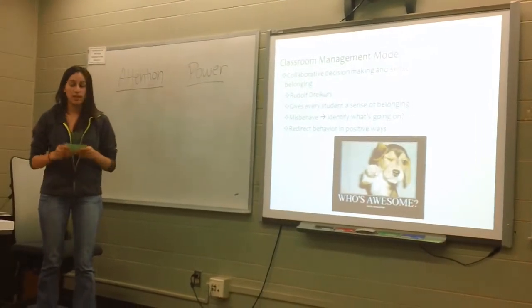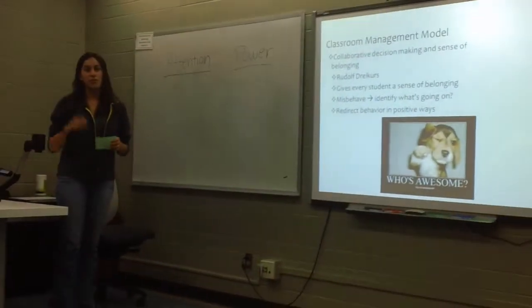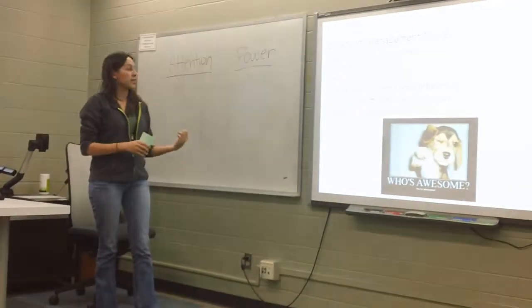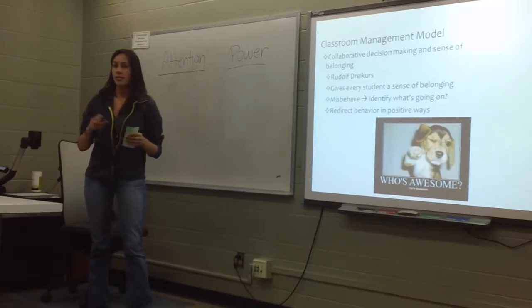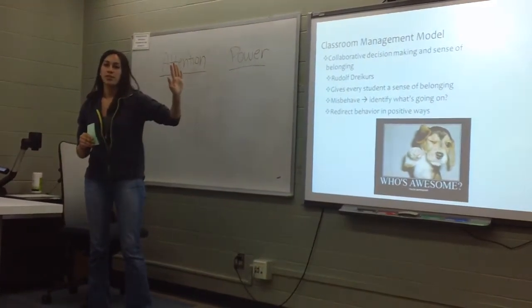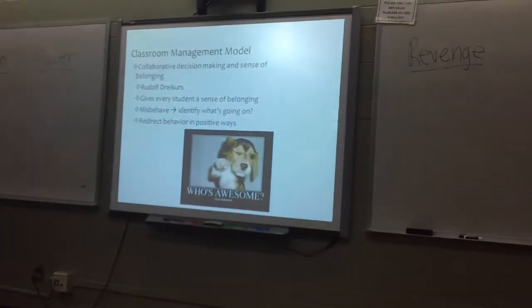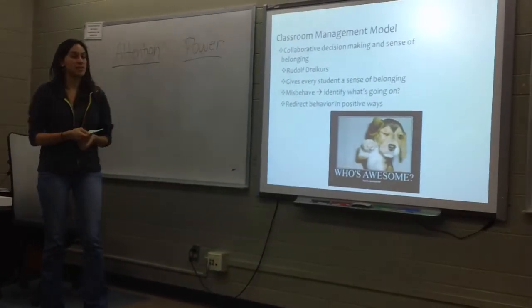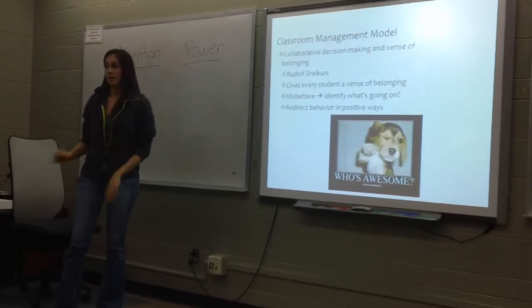When they do misbehave, he called it the four mistaken goals: attention, power, revenge, and inadequacy. Attention is like throwing things or saying things to get your attention. Power is a power struggle between you and the student — like they're talking with friends while you're trying to control the classroom. Revenge is like cheating on tests or causing other students harm — that's a bit more drastic. And inadequacy is when they give up and withdraw from the classroom entirely, not paying attention — just kind of a bump on a log.